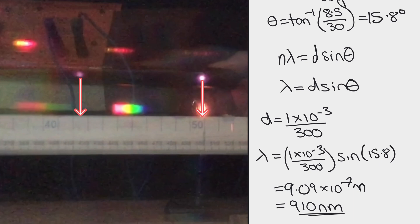That seems reasonable because the end of visible light is between 700 and 800 nanometers and that's well beyond the end.